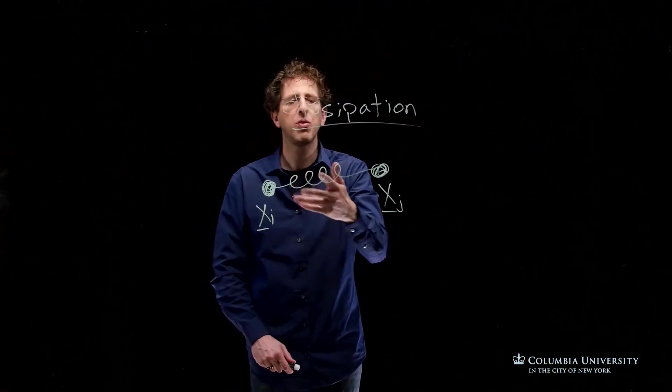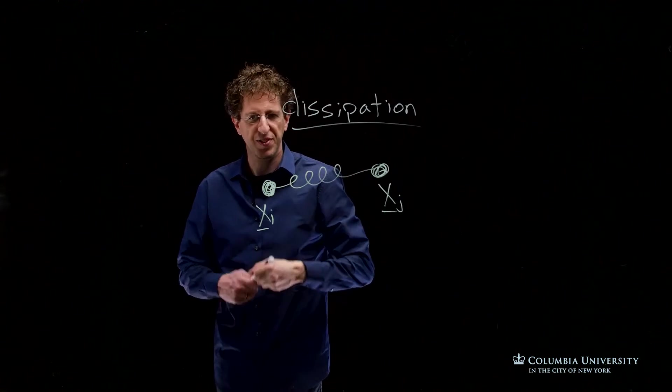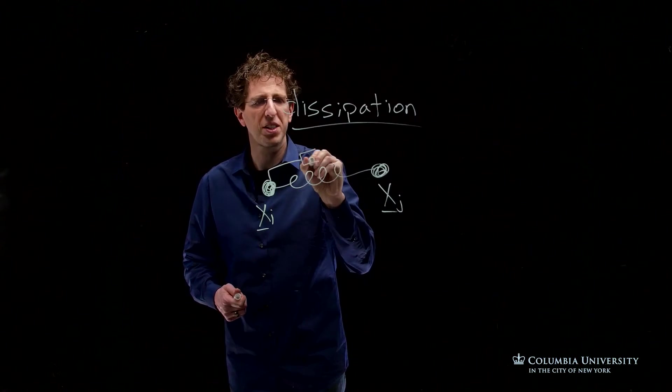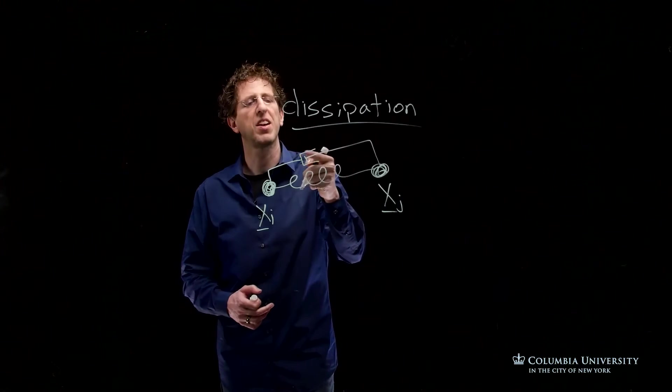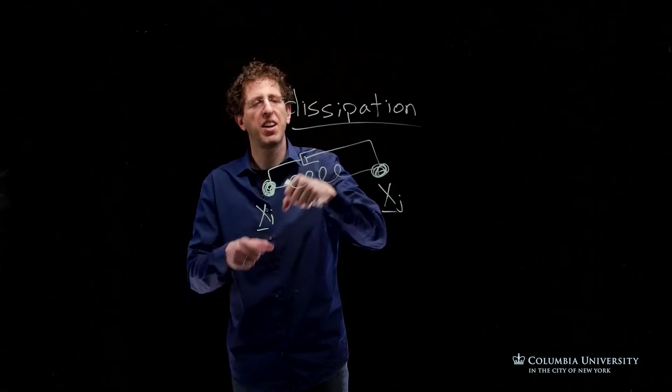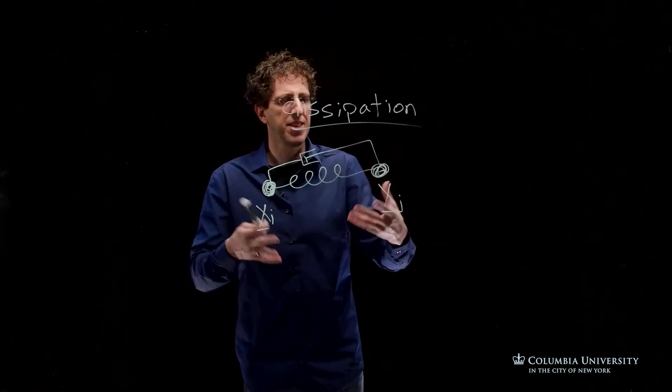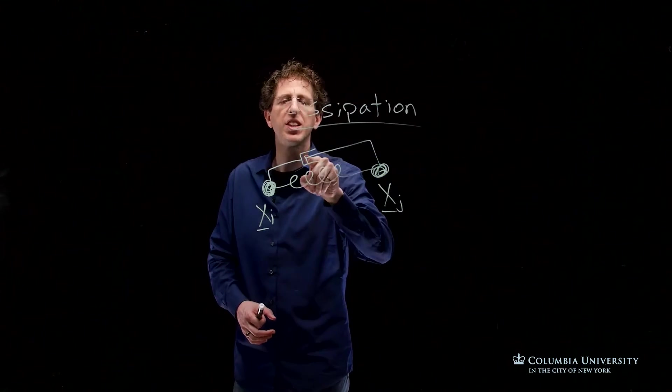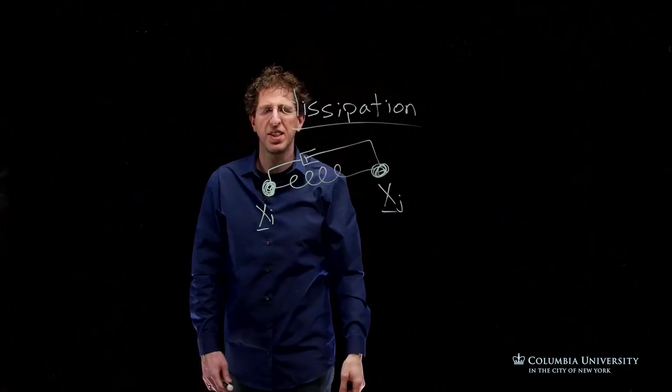We want to see if we can model energy decay directly inside the spring. Sometimes we draw this as a dashpot or a damper. I think of this like a bike pump. There's some air coming in and out of here as this moves in and out, and each time it slows the spring down. Some of the energy is converted into acceleration of this air, which is then dissipated into the environment.